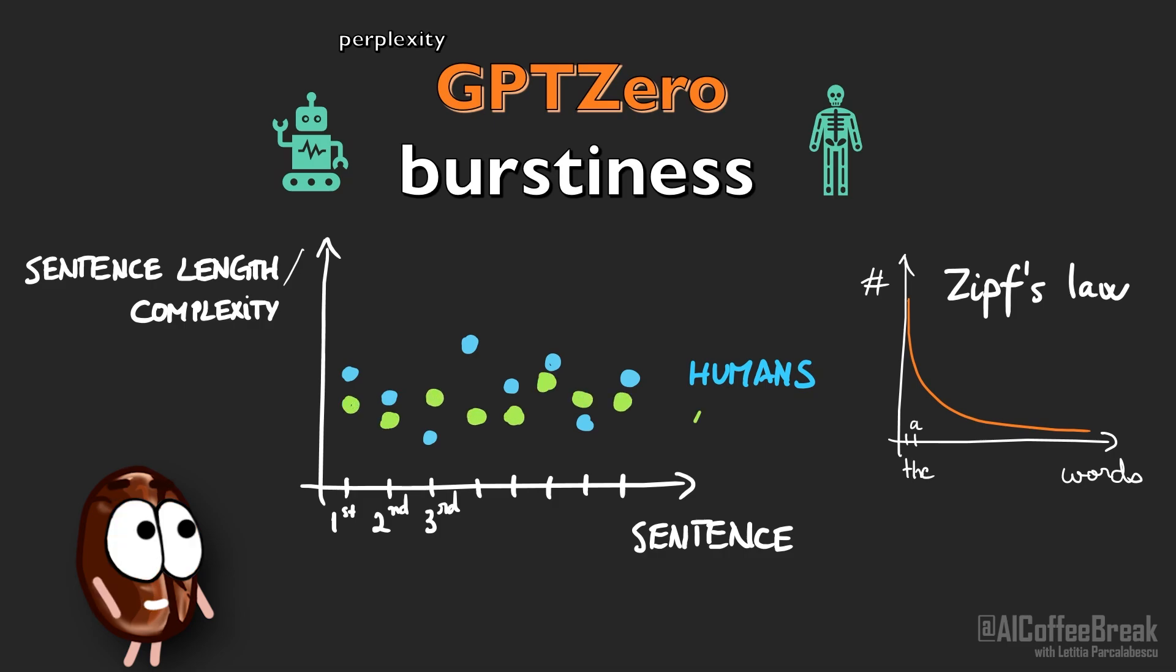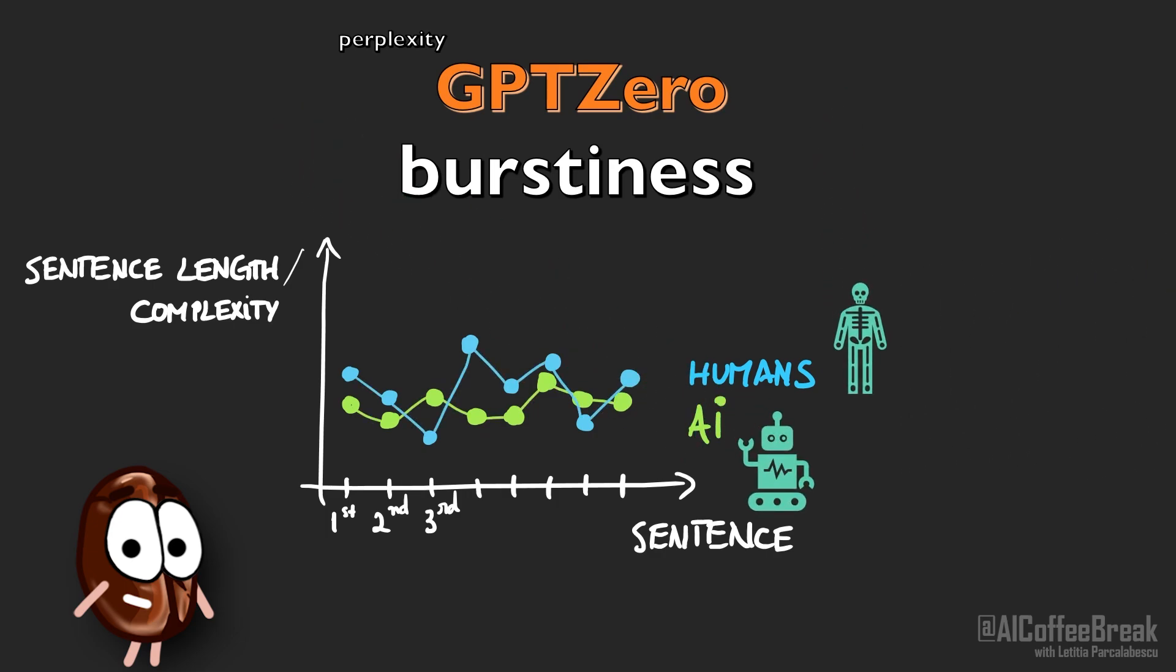Language models are more constant in the way they write out their sentences. So going on sentence by sentence, one can plot the complexity of each sentence. For humans, these values will vary a lot, while for models, the value will be quite similar for all sentences. Then a bumpy burstiness graph will likely belong to a human essay, while a more constant graph will belong to an AI-generated essay.